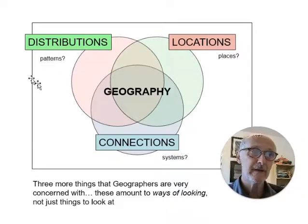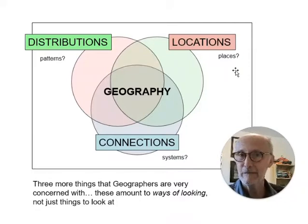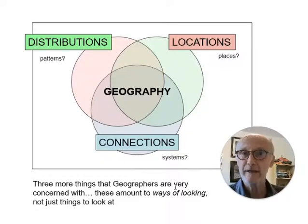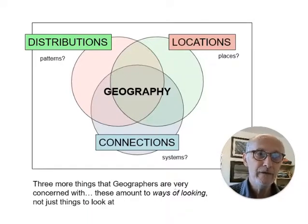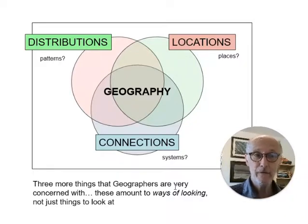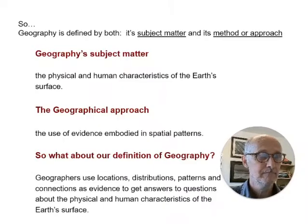Distributions, as shown on the diagram here, tell you something about the patterns of things through space. Locations are particular places where certain things happen. And connections are the systems that make geography work — that tie geography together. So when we think about geography in terms of distributions, locations, and connections, we're not just looking at the topics or subject matter of geography. We're saying these are the ways of looking at that subject matter — the methods or the approach that geographers take. And that's a key point for this session.